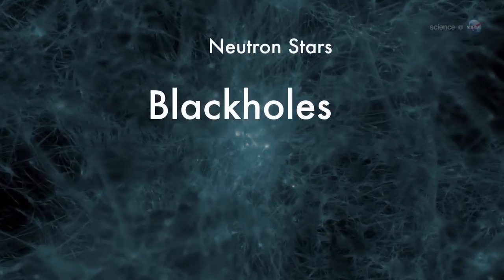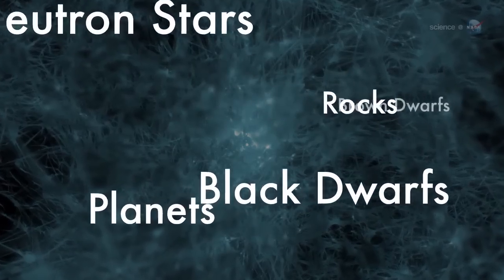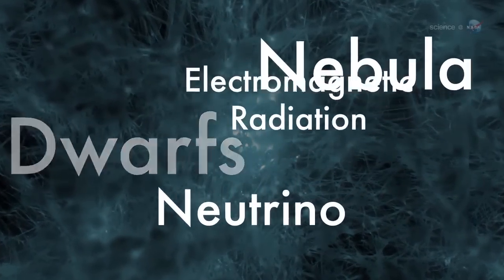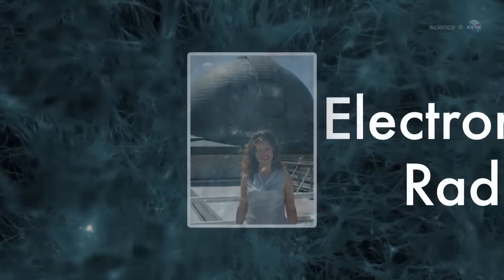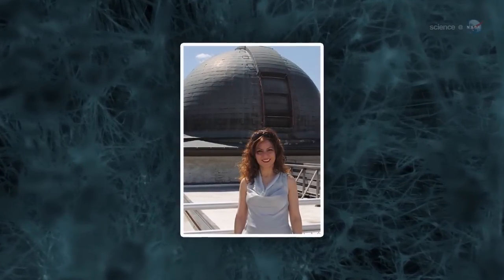After we submitted the paper, theoreticians came up with about 60 different dark matter types which could explain this line. Some particle physicists have jokingly called this particle a bulbulon, she laughs.